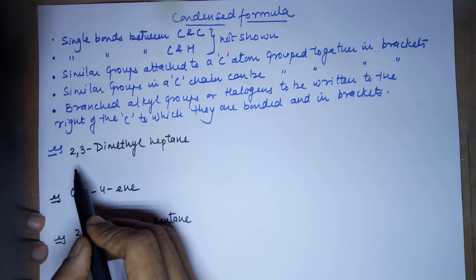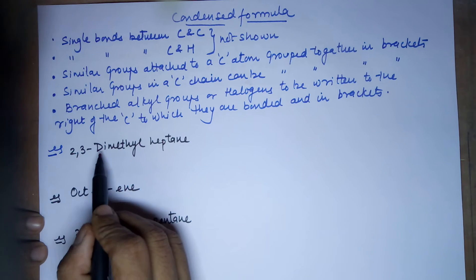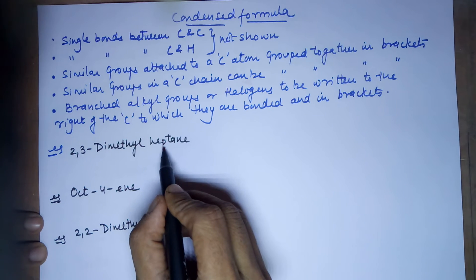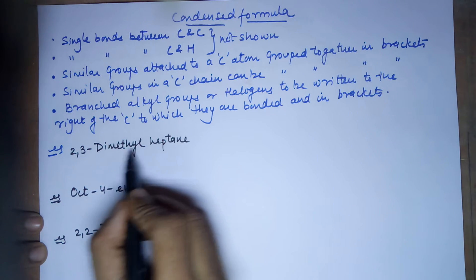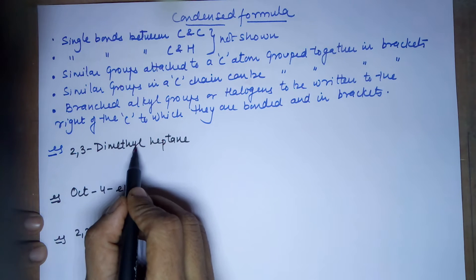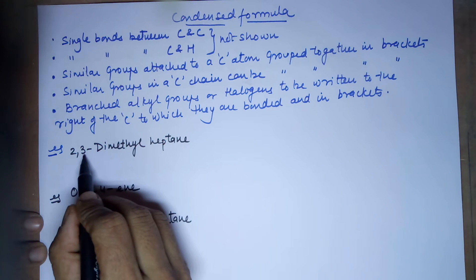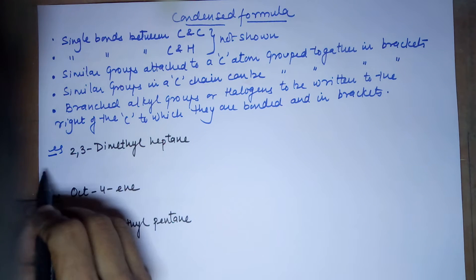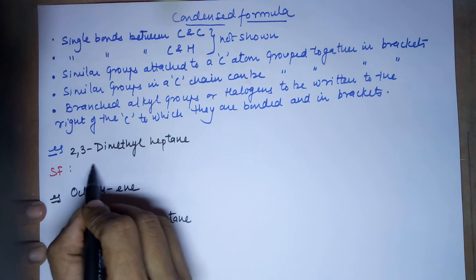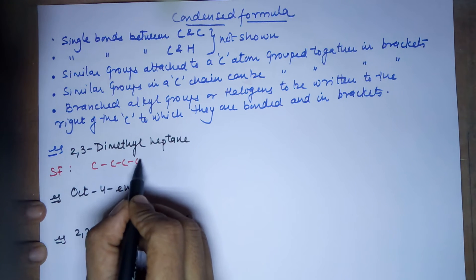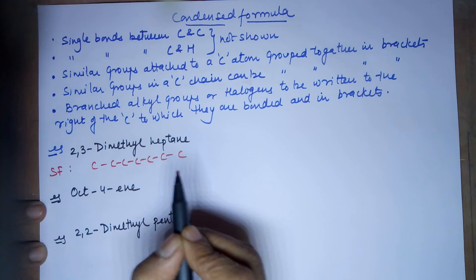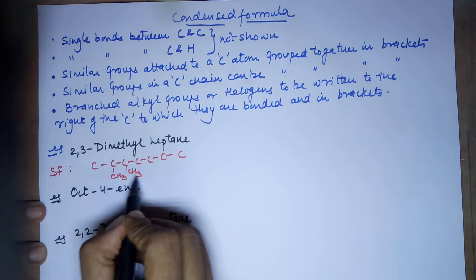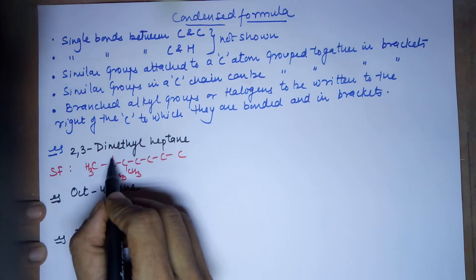I'll illustrate these key points with an example. The first example is 2,3-dimethylheptane. '-ane' means single bond, 'hept' means seven carbons, 'methyl' is CH3, 'dimethyl' means two methyls, and these two methyls are placed at the second and third carbon of the heptane chain. So the actual structural formula has one, two, three, four, five, six, seven carbons — you have a methyl at C2 and a methyl at C3, and the rest of the hydrogens are satisfied.